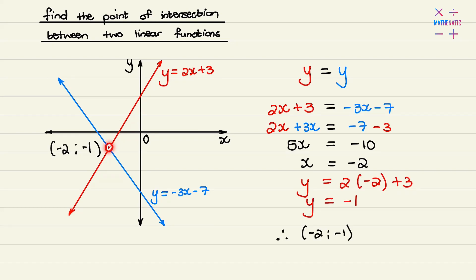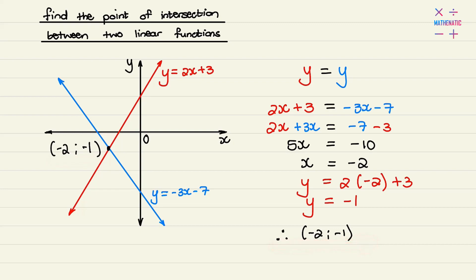So on the graph, the point of intersection is at x equal to negative 2 and y equals negative 1. Therefore the point of intersection is negative 2 and negative 1.